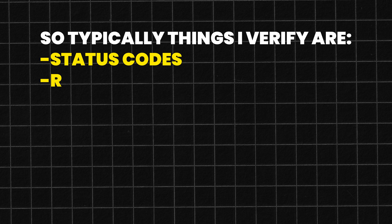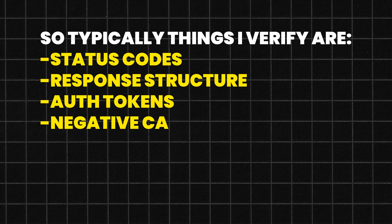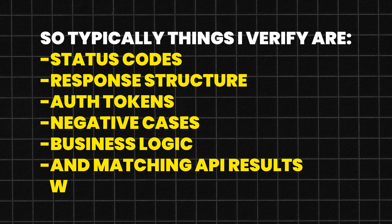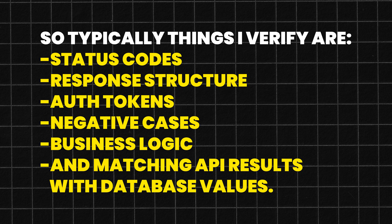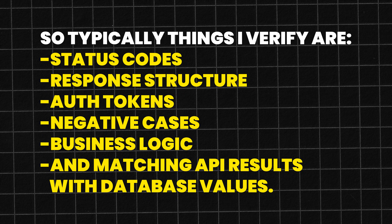Now let's go deeper into modern QA: describe your experience with API test automation. I do API testing every day with Playwright, Cypress, and a lot in Postman. Typically the things I verify are status codes, response structure, auth tokens, negative cases, business logic, and matching API results with database values. API tests are faster and more stable, so I use them wherever possible, especially for setup.